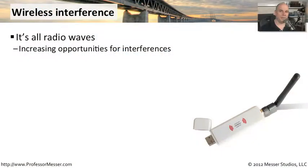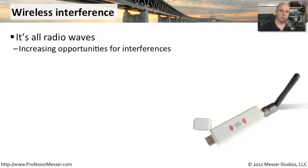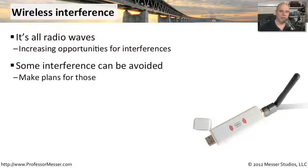When you're working with a wireless network, you have to remember that this is all radio waves. Anything that can create problems for your radio waves is going to create problems for your wireless network. There are all types of places where interference and problems might come from, and you have to consider all of those when you're troubleshooting the network.